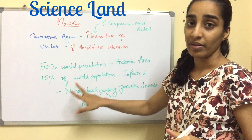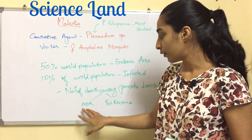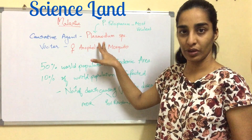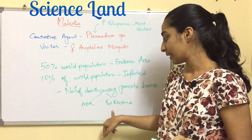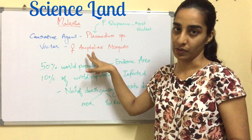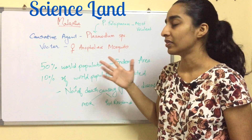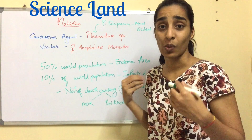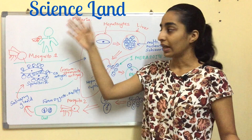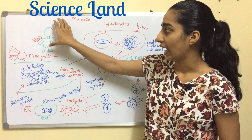10% of the world population is always infected with low levels of Plasmodium in their blood. What makes it the number one death-causing disease? There are two main reasons: the first is multiple drug resistance in Plasmodium species, and the second is pesticide resistance of the Anopheles mosquito. These are the two main reasons why it causes so many deaths annually.